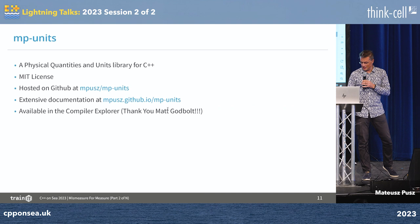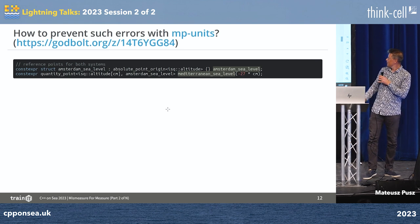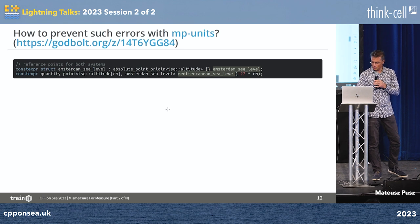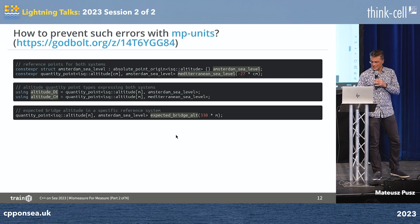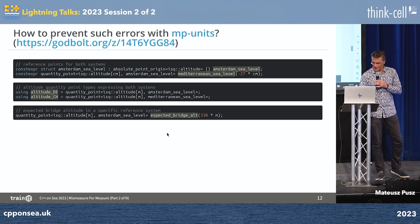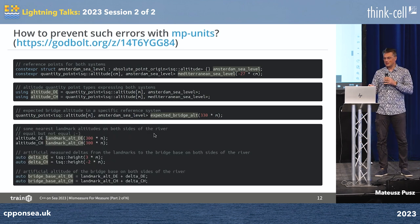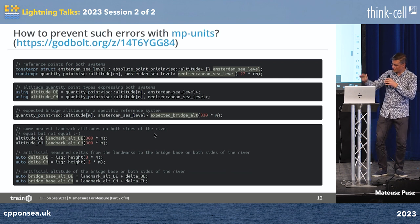If you go to my library on GitHub, or to Compiler Explorer, you can try this out yourself. First, you need to define the reference points — we define Amsterdam sea level, and based on it we define the Mediterranean sea level as being 27 centimetres lower. We define types for altitudes using those two reference points, for Germany and Switzerland. Then we provide some expected bridge altitude — let's say 330 metres. On one side of the river let's assume a 300-metre landmark, and we find out what the base of the pillar is on each side.